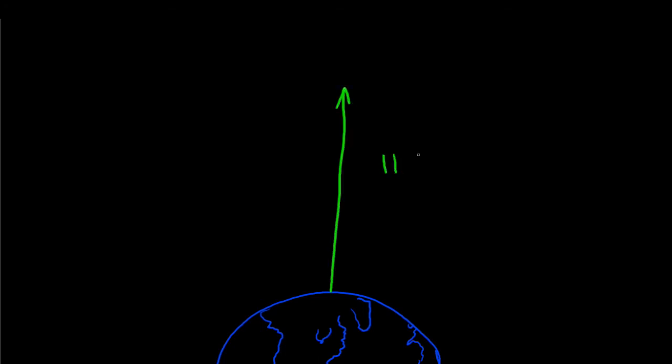This is called the escape velocity. On Earth, the escape velocity is about 11 kilometers per second. That's right. Throw a rock upward at 11 kilometers per second, and neglecting air resistance, it'll never fall back to the ground. Of course, 11 kilometers per second is about 24,000 miles per hour, which is way faster than even the bullet from a gun.